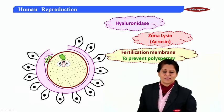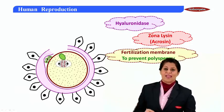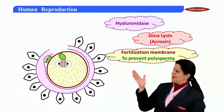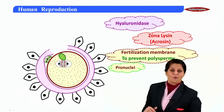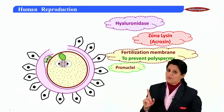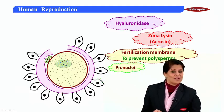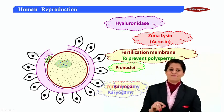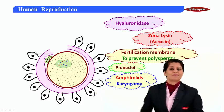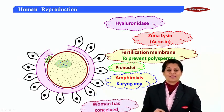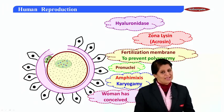Now both nuclei — the sperm nucleus and the egg nucleus — absorb a lot of water and start growing inside; we now call them pronuclei. The sperm pronucleus fuses with the egg pronucleus. We call this process amphimixis or karyogamy — 'karyon' meaning nucleus and 'gamy' meaning marriage. This is the moment when we say the woman has conceived or is pregnant.